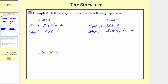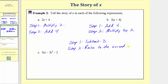For the expression five times the quantity x minus three squared minus two, we follow the order of operations and simplify inside the parentheses first. Step one: subtract three. Step two: raise the result to the second power. Step three: multiply by five. And finally, step four: take the result of step three and subtract two.